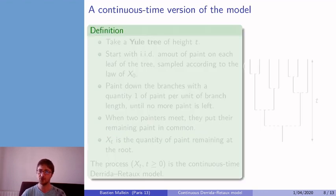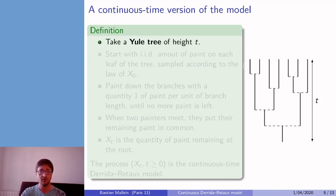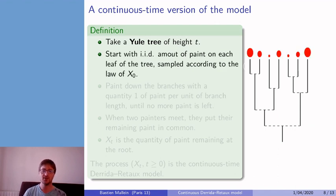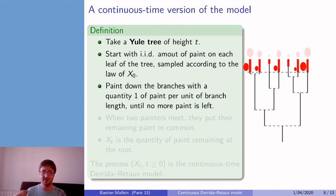So now, let us introduce a continuous-time version of the model to study the previous conjecture. So take a Yule tree of height t, instead of the binary tree. What we do is that we start with i.i.d. amount of paint on each leaf of the tree, that are all sampled according to the same distribution.